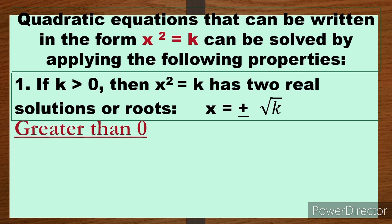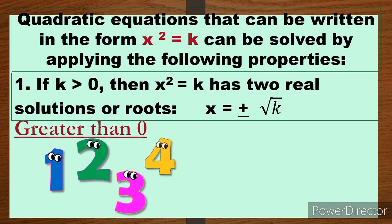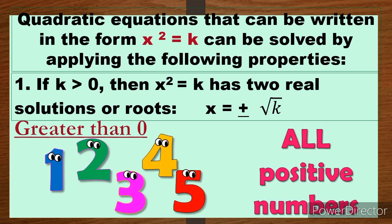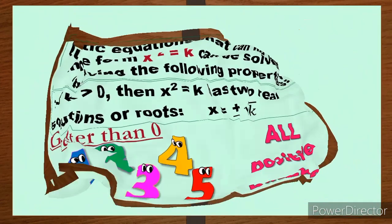What are those numbers greater than 0? They are positive 1, positive 2, positive 3, 4, 5, and all positive numbers — those are k greater than 0. So that is the first property: when k is greater than 0, the quadratic equation will have two solutions or two roots.